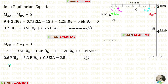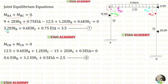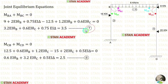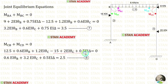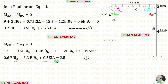Now let us make the joint equilibrium equations. At joint B, moments M_BA and M_BC sum to zero. Substituting the slope deflection expressions for M_BA and M_BC and keeping the numerical terms on the right side gives equation 7. At joint C, moments M_CB and M_CD sum to zero. Substituting and simplifying gives equation 8.